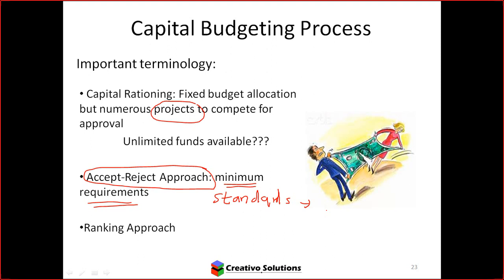Think of a mobile phone — what are the minimum requirements? Internet access, taking nice pictures, WhatsApp, Instagram. Would you buy a phone that doesn't have a colored screen? No. A camera? No. Internet connection? No. Those phones used to exist and now they don't, because minimum requirements are in place. There's an accept and reject approach — we will not accept a mobile phone that doesn't meet certain requirements. The same thing applies to projects.